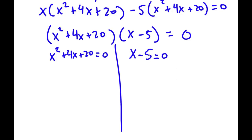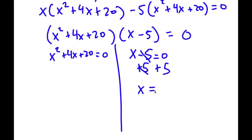For x minus 5 equals 0, this is actually really simple. All I have to do is add 5 on both sides, so these two cancel out. I'm left with x is equal to 5.